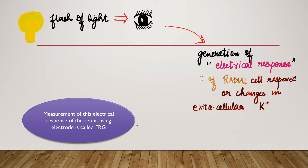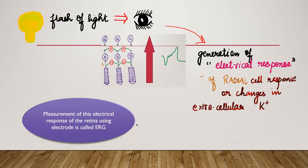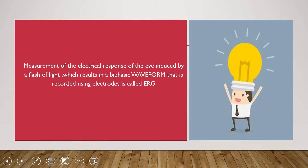You can measure the functionality of the inner retinal cells — the bipolar cells, the amacrine cells, and also the ganglion cell. When a flash of light is projected onto the retina, it leads to the generation of electrical responses. This electrical response originates from the photoreceptor cells, goes to the bipolar cells, and then to the ganglion cells. When you measure that electrical response using an electrode placed on the cornea or conjunctiva, you are doing Electroretinography.